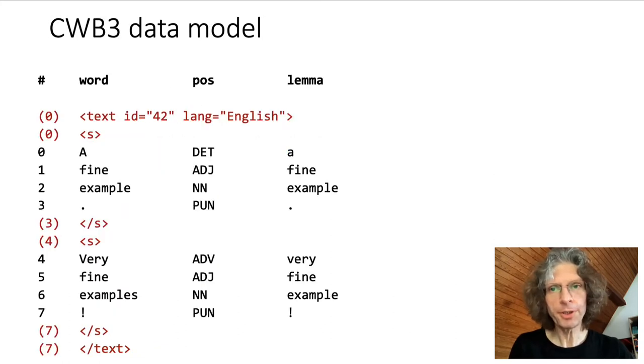Such a tabular data format can be represented as an annotation table, similar to a relational database. Each row of the table corresponds to a single token. Rows are numbered starting from 0, we call this the corpus position of the token, and then the columns correspond to annotations, the first column always being the surface form of the token.